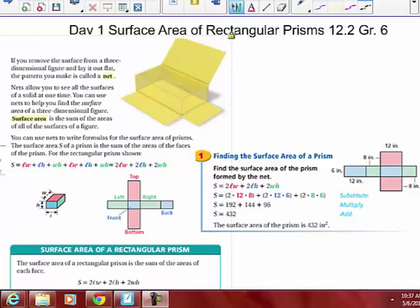Today's video is going to talk about the surface area of rectangular prisms. You can see in your notes that this is in the Grade 6 textbook, Chapter 12, Section 2. It talks about nets, which we know if you lay out the figure flat and all the surfaces, you can see all the surfaces individually.